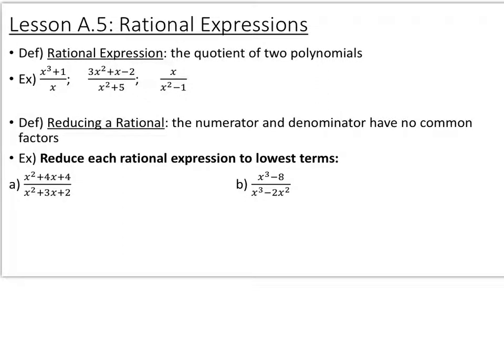Section 8.5 is rational expressions. A rational expression is a quotient of two polynomials — something that looks like this — where the numerator or denominator could even be a constant term, because that's still a polynomial.